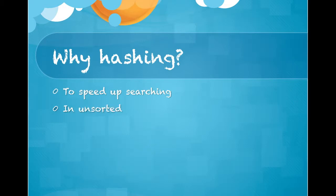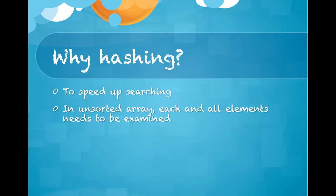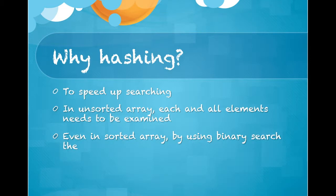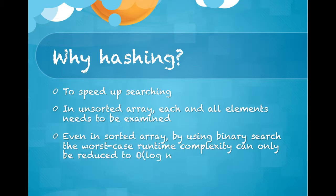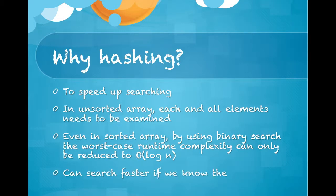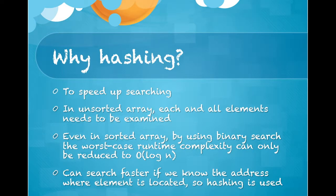In an unsorted array, each and all elements need to be examined, which is much more complex. Even in a sorted array, by using binary search, the worst case time complexity can only be reduced to O(log n). But hashing can search faster if we know the address where the element is located.